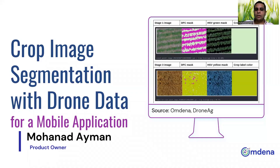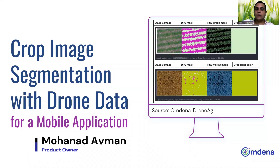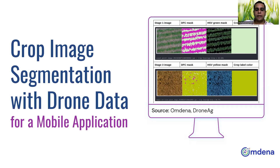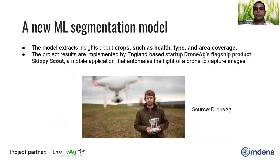Welcome everyone to today's tutorial about the Omdinus project of crop image segmentation with drone data for mobile application. My name is Mohanad and I am the product owner of that project. Our partner is DroneAG. The aim of the project is to build a new machine learning segmentation model that extracts insights about crops such as health, type, and area coverage.